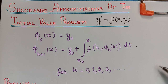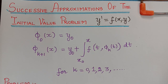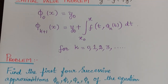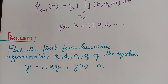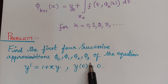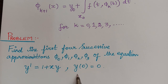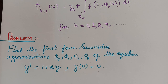Using this formula, we can successively find the approximations for the initial value problem. The question asks us to find the first four successive approximations φ₀, φ₁, φ₂, φ₃ of the equation y' = 1 + xy, where y(0) = 0. This is our initial condition.